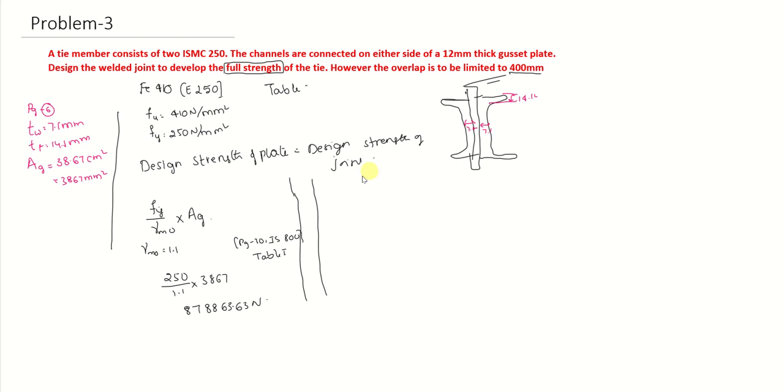How can you find out the design strength of welded joint? From page number 78 of IS 800, the design strength is equal to the nominal strength by safety factor MW. What is FW? It is FU by root 3 into effective area.